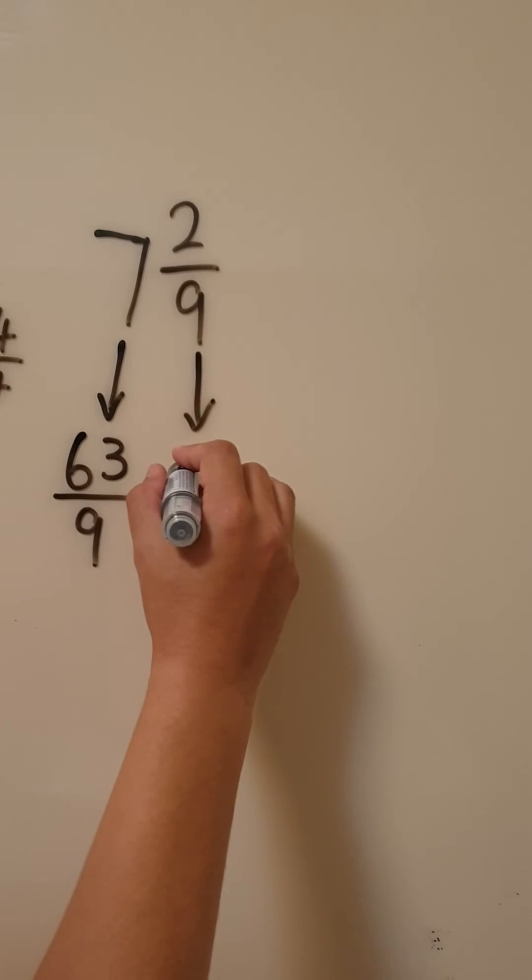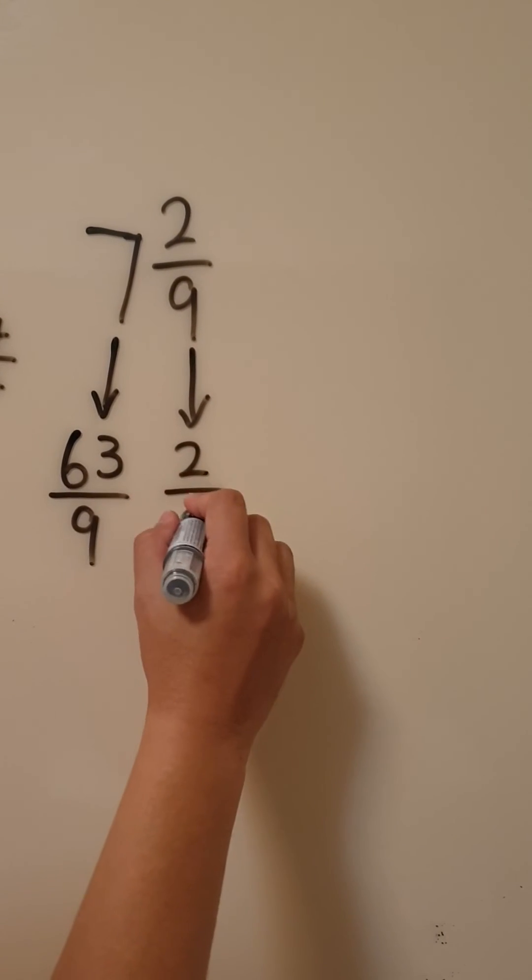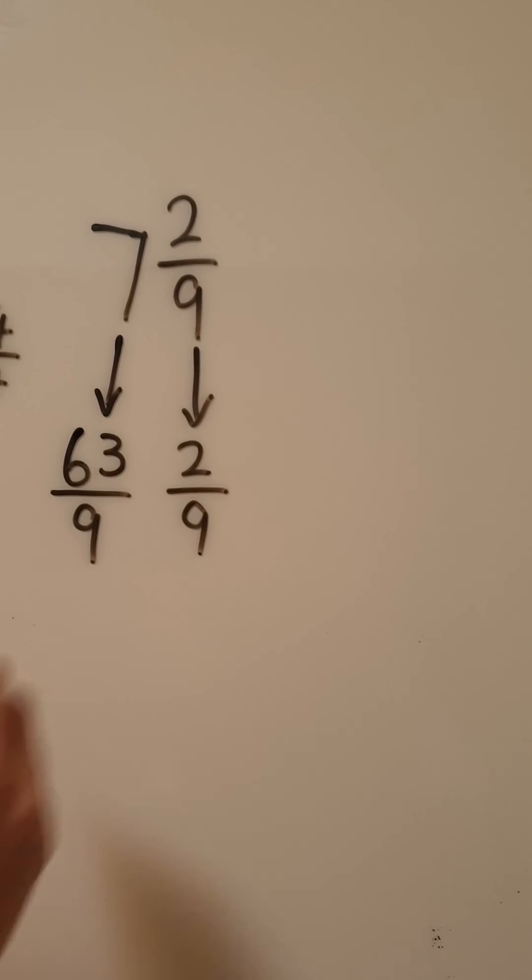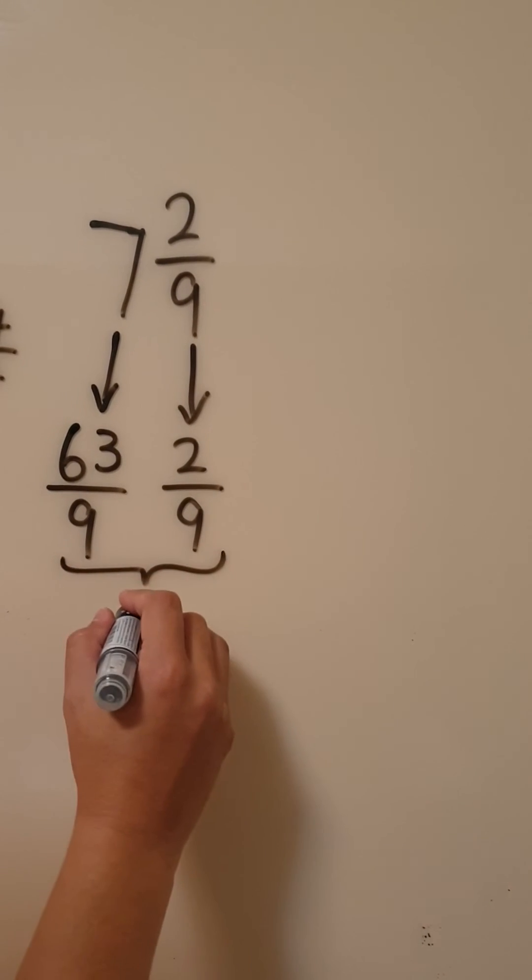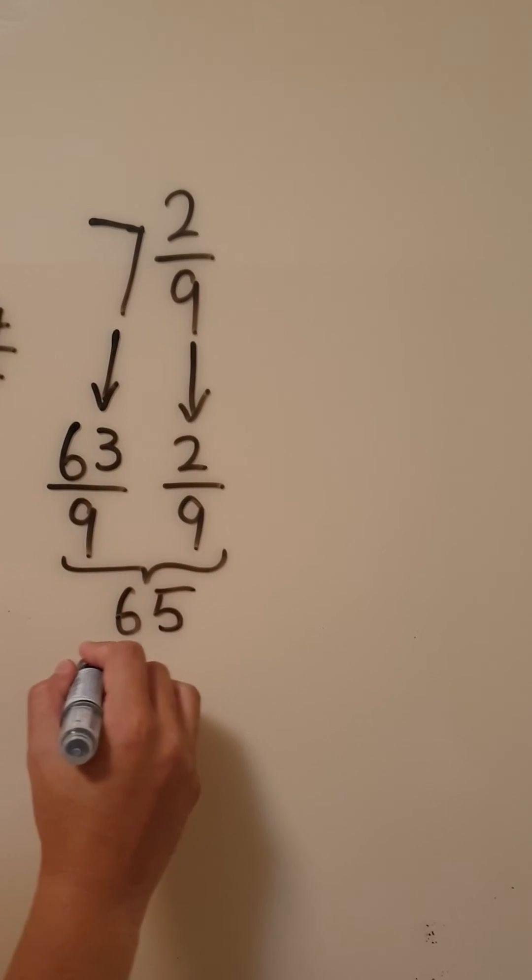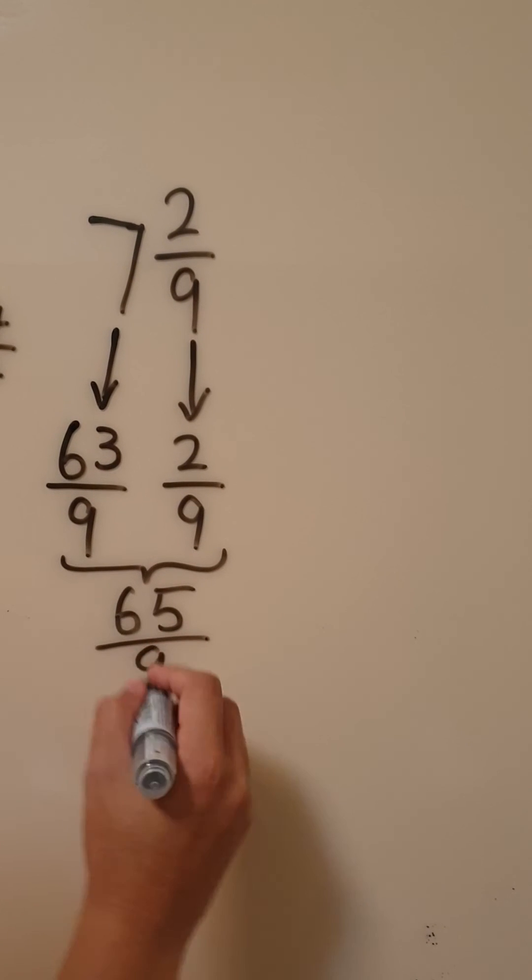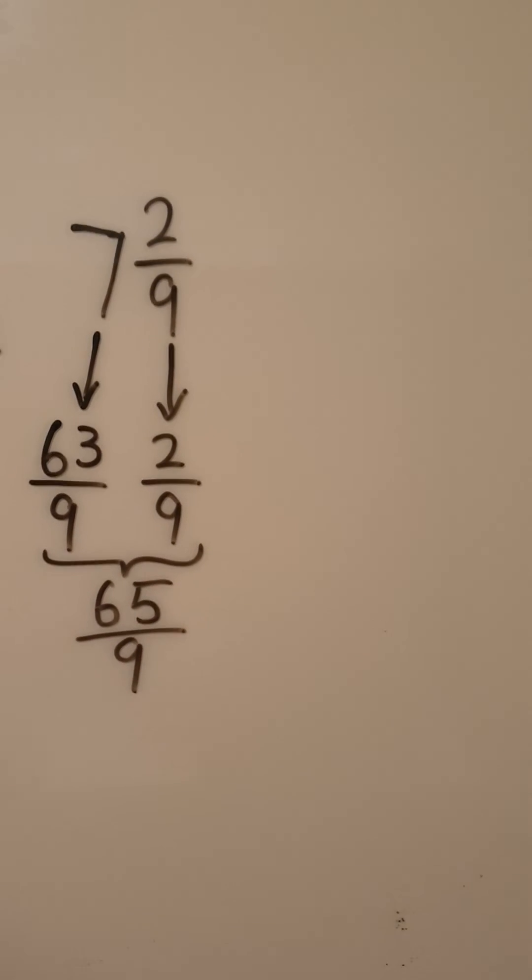And we have two ninths left here. So all together, this will give us sixty-five parts out of nine parts here or sixty-five ninths.